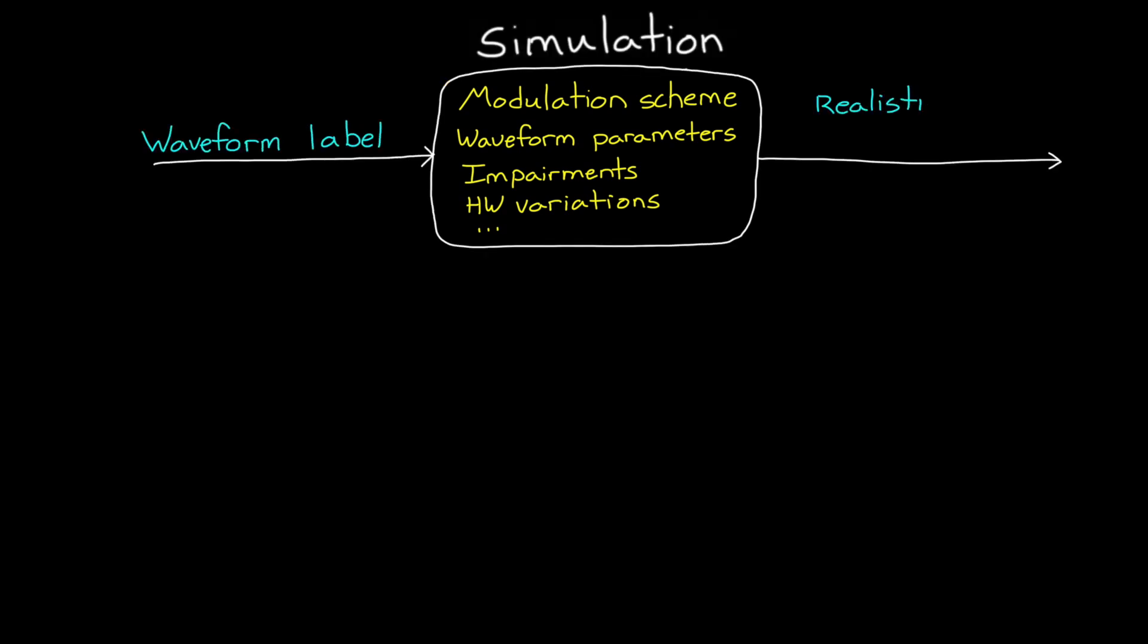For example, we can list out the modulation schemes we want to classify and their specific parameters, the types of impairments we want to be able to handle, the variations in the hardware, and anything else we deem important. And then, using all of that, we can build a simulation that will generate realistic received signals across the entire solution space.